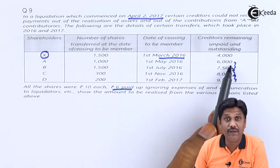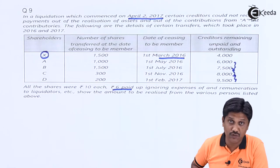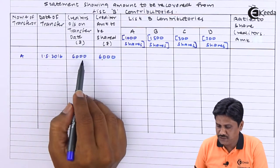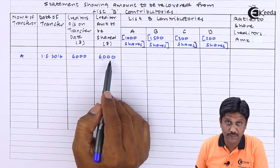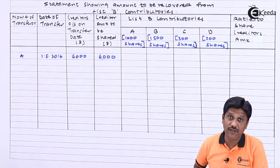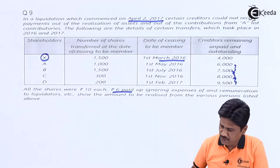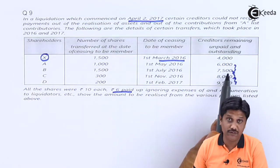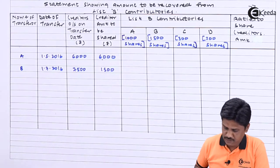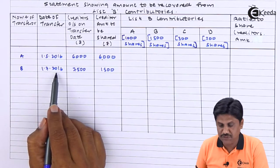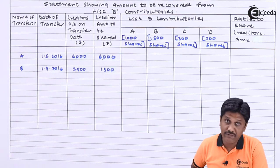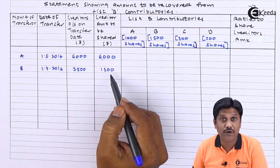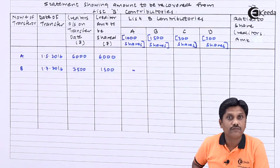When A transferred his 1,000 shares on 1st May, the liability was Rs. 6,000, so the liability to be shared is Rs. 6,000. Next, Mr. B transferred his 1,500 shares on 1st July 2016; at that time the overall liability became Rs. 7,500. But the sharing will be of only the incremental Rs. 1,500, because in that increased amount A will not share anything — A already transferred his shares on 1st May.